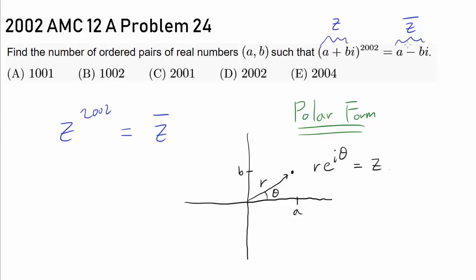We want to raise Z to the 2002nd power and get Z̄. And Z̄ is A - Bi, the complex conjugate. So we want to raise this number to the 2002nd power and get Z̄.